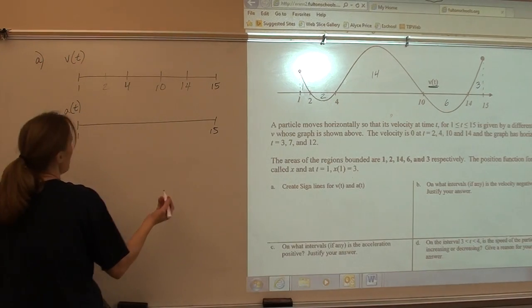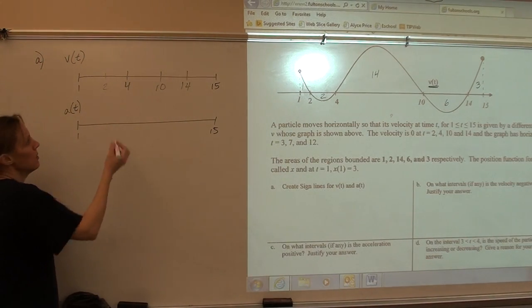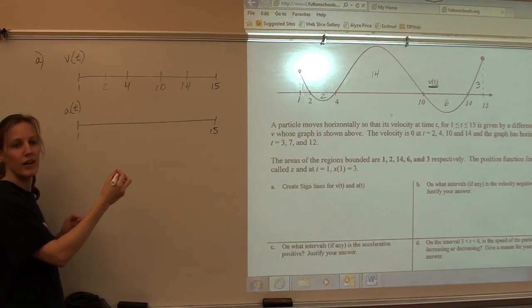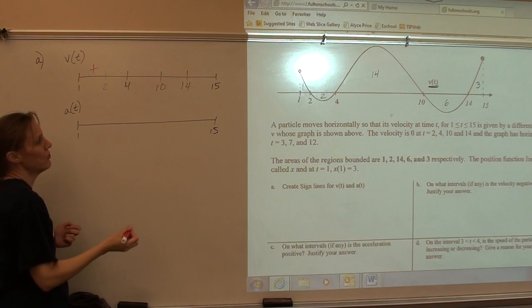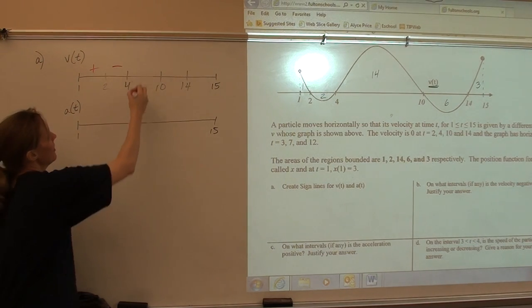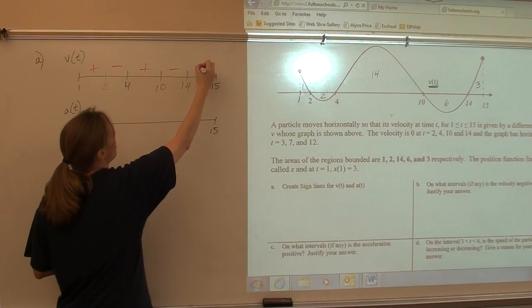So from 1 to 2, the velocity is positive. From 2 to 4, it's negative. 4 to 10, positive. 10 to 14, negative. 14 to 15, positive.